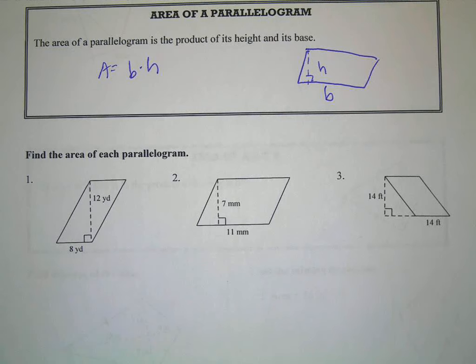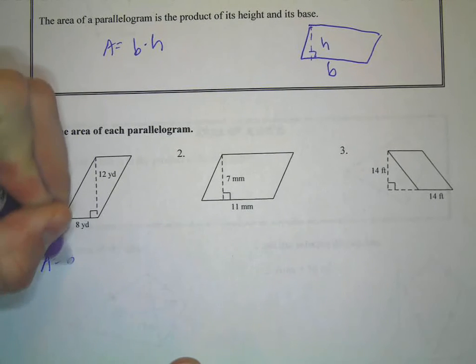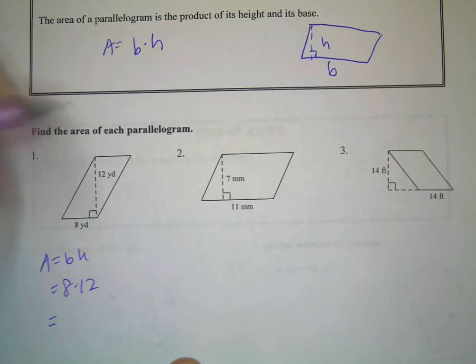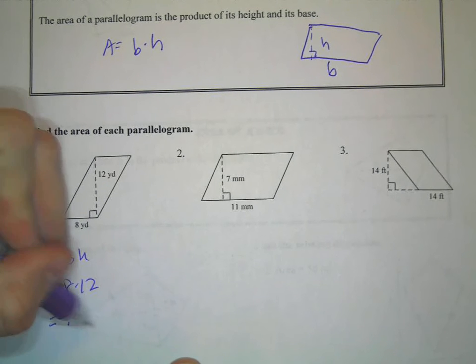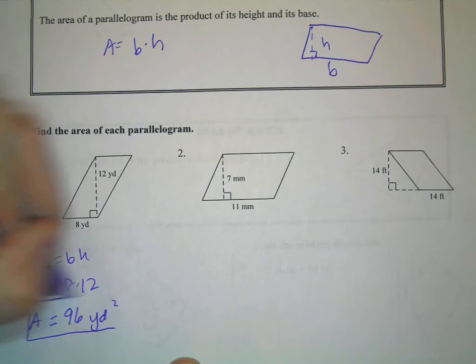Okay, so find the area of each parallelogram. Area equals base times height. The base is 8, the height is 12. 8 times 12 is 96 square yards. That was easy enough.